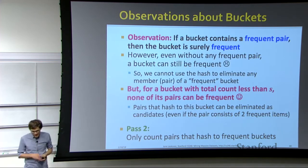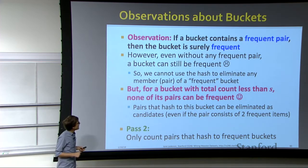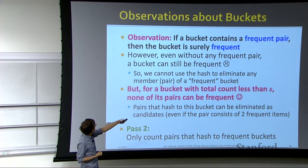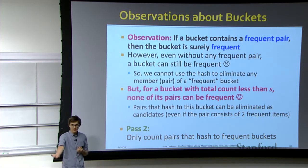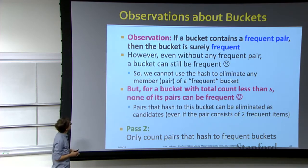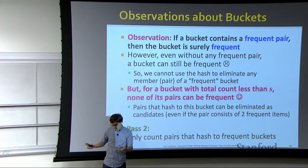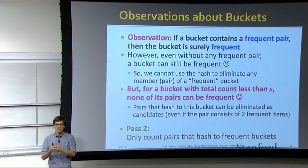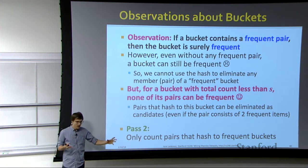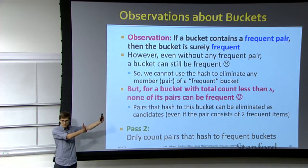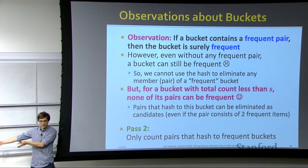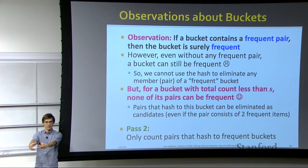Why is this useful? If a bucket contains a frequent pair, then the bucket count will be greater than S. Even without any individual pair being frequent on its own, the bucket can still have a high count if multiple infrequent pairs hash into it. For example, pairs A-B, F-G, and Z-Y all hashing to the same bucket might contribute counts of 30, 40, and 40 respectively, making the total bucket count over 100.